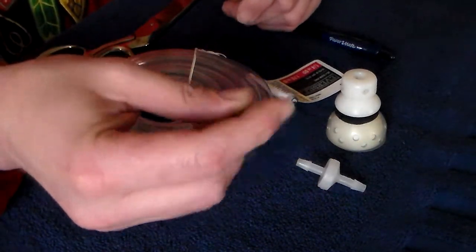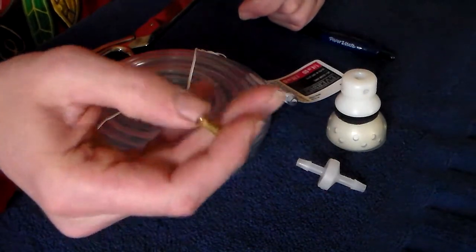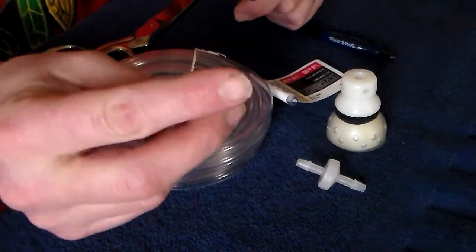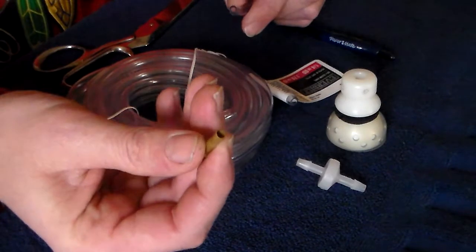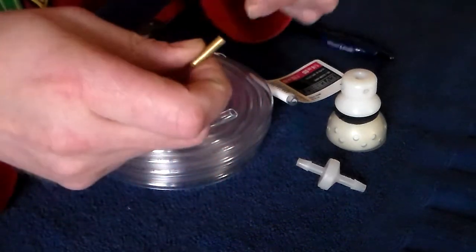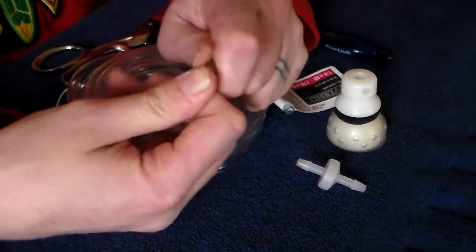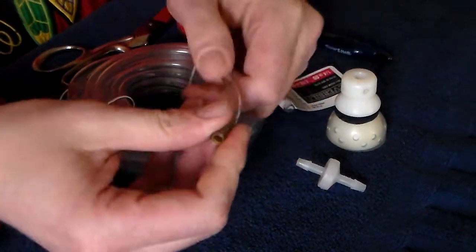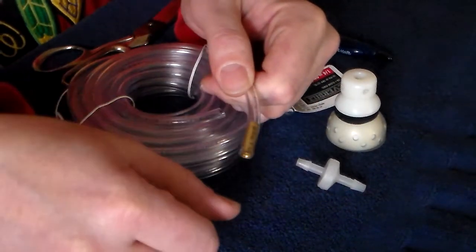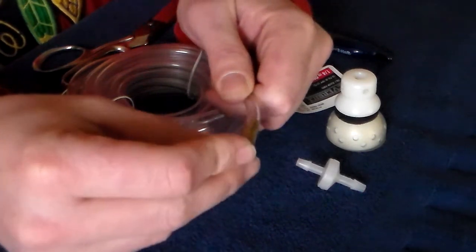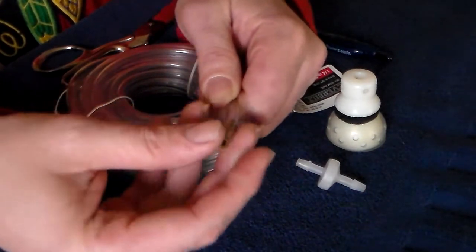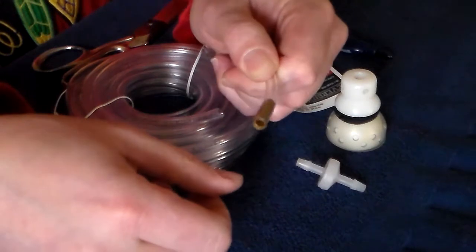You'll take your brass ferrule fitting and you'll see that one end is flared. You're going to insert the non-flared end into the tubing. If you find it difficult to insert, you can lube it with a little rubbing alcohol, but you don't typically want to use water because it will not dry.